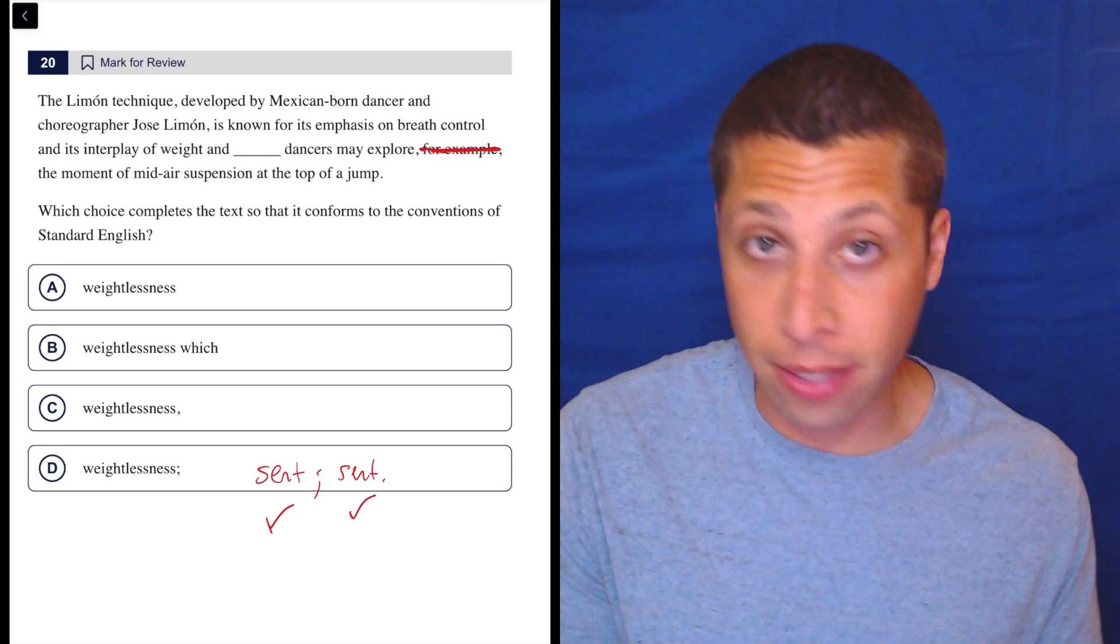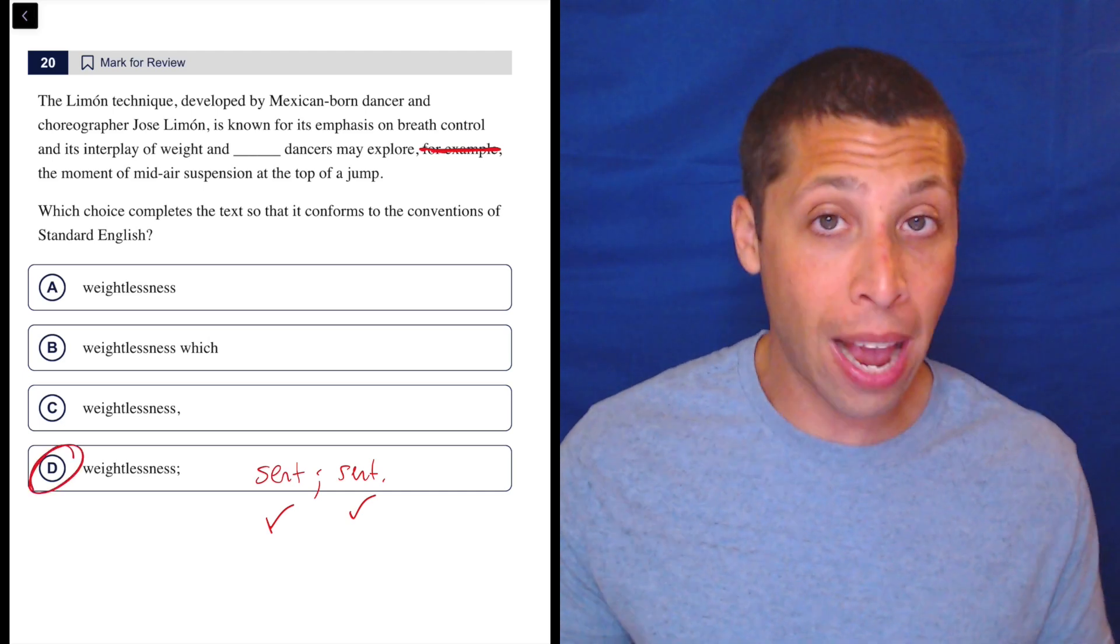Dancers may explore the moment of midair suspension at the top of a jump. Dancers may explore the moment. That's the sentence, right? So there's two sentences. We're done. We have to pick it.